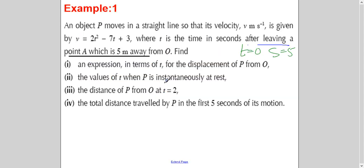The next part of the question asks us to find the values of T when P is instantaneously at rest. Instantaneously at rest means when V equals 0. The velocity equation is already given, so we set it equal to 0 and solve.